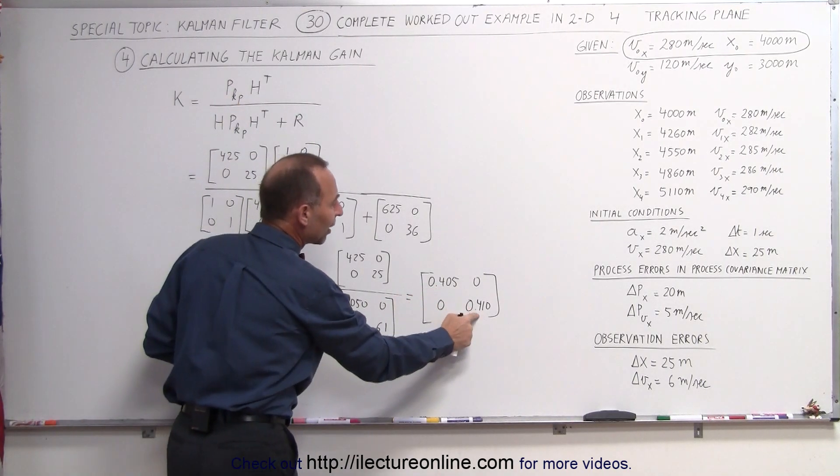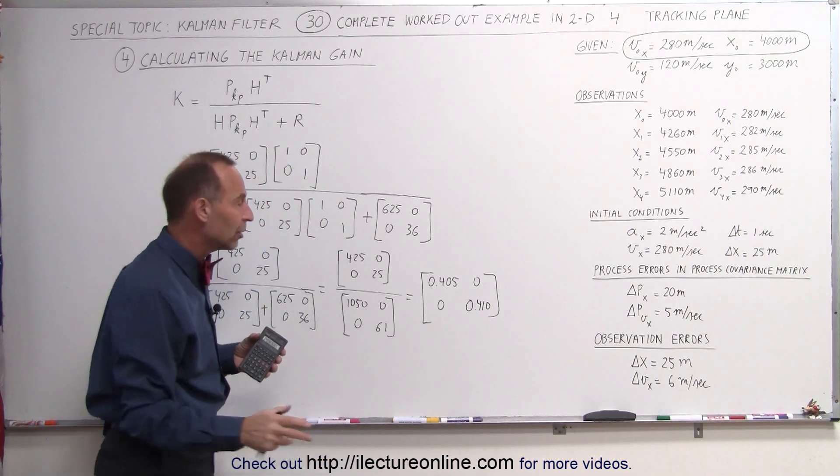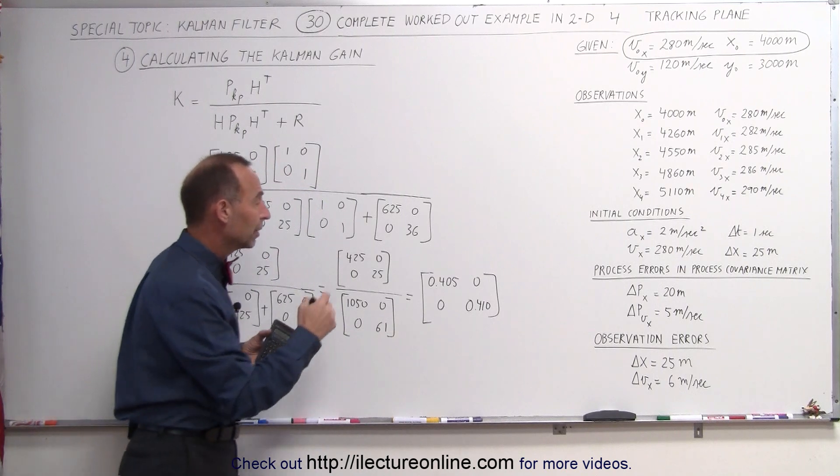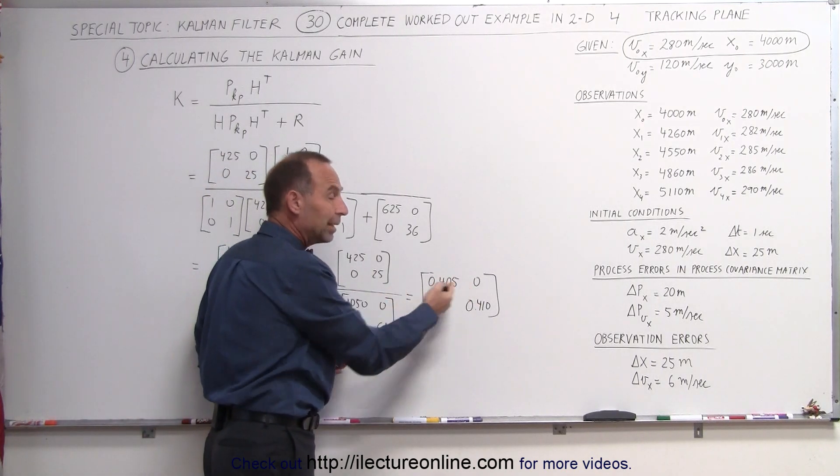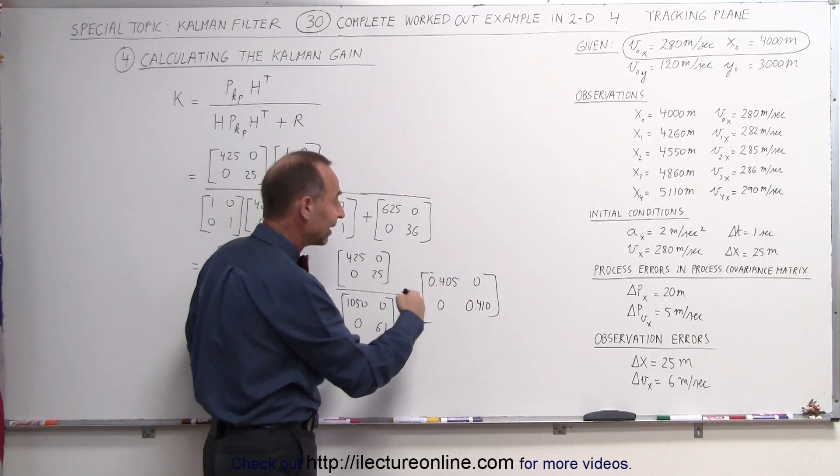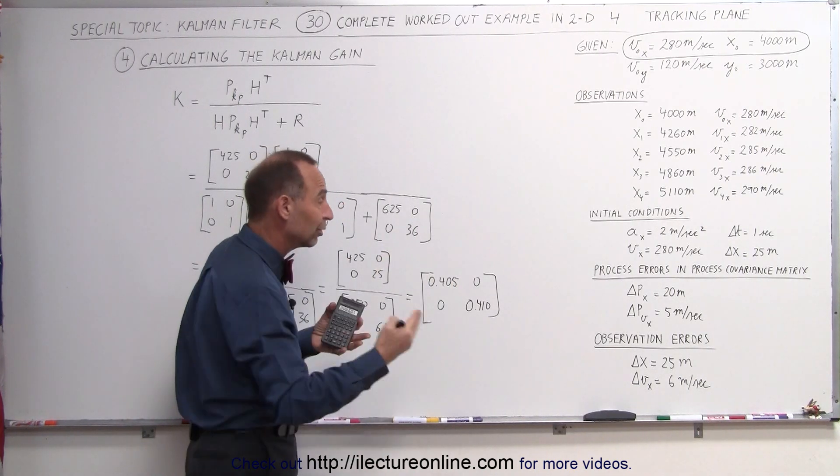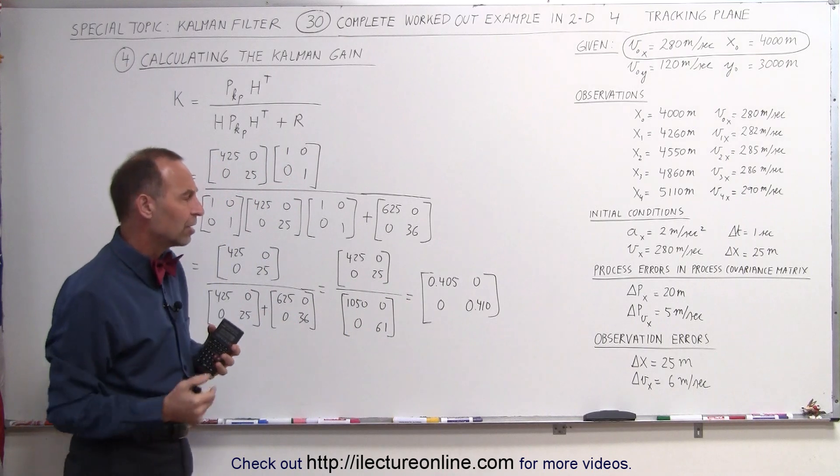So this means that we don't put as much value in the observation as we do in the predicted updates using the equations, because it tells us that the error in the observations is slightly larger than the error we can expect in the covariance matrix, which then drives the predicted state.